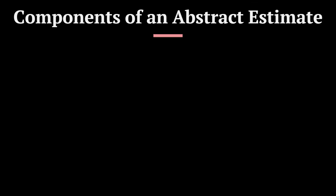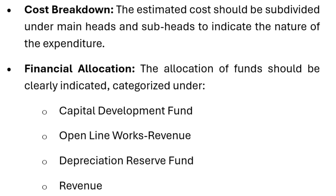Components of an abstract estimate: The abstract estimate should include the following key components. First, a brief report and justification — a short explanation of the need for the project and its significance. Second, specifications — basic details regarding the materials and standards to be used. Third, fund requirements — a statement on whether funds are needed in the current financial year and the extent of the requirement. Fourth, cost breakdown — the estimated cost subdivided under main heads and sub-heads to indicate the nature of the expenditure.